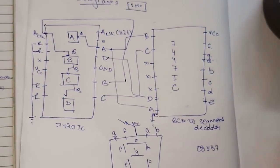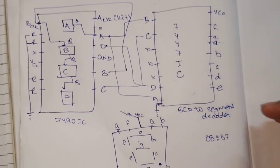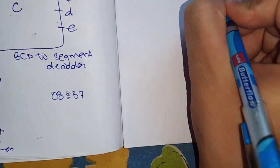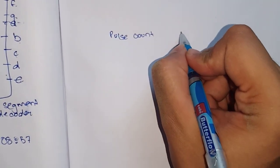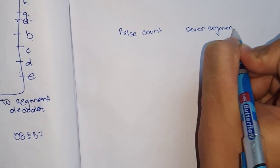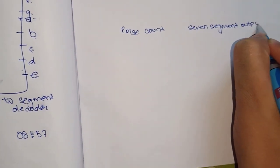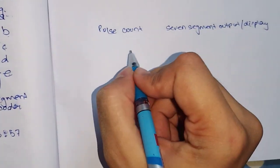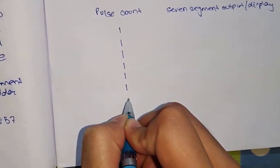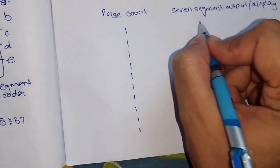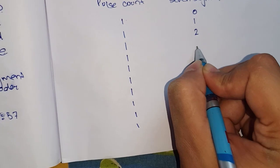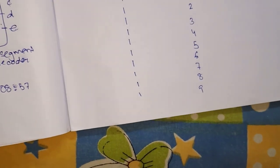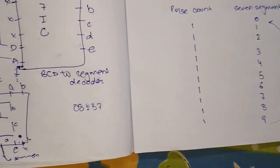In the truth table you have to write pulse count and 7-segment output or display. Just remember it like this: 1, 2, 3, 4, 5, 6, 7, 8, 9, 10. First it will show zero, then one, then two, then three, then four, then five, then six, then seven, eight, then nine. Then again it will show zero, then again it will repeat.